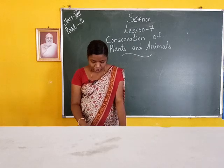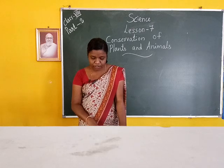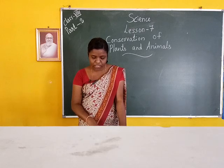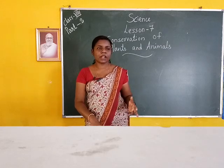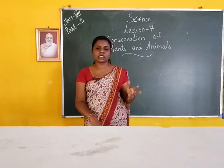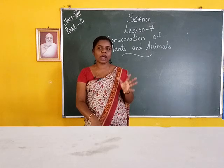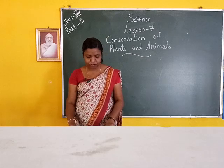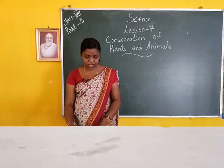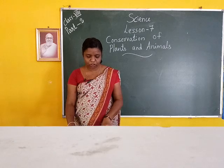Sometimes we kill snakes, frogs, lizards, bats, and owls without realizing their importance in the ecosystem. In our ecosystem, small plants, insects, and small animals are all important. By harming them, we are harming ourselves. They might be small in size, but their role in the ecosystem cannot be ignored.